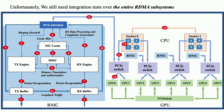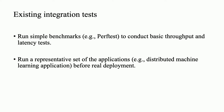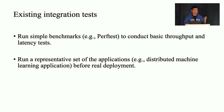Therefore, we need to test the entire RDMA subsystem, which includes the RDMA NIC and all related hardware components. We call this the RDMA subsystem. People today have two approaches to conduct such integration tests: the first is to run simple benchmarks such as perftest to measure end-to-end RDMA performance in terms of throughput and latency; the second is to run a representative stack of real applications. For example, if the cluster is aimed at supporting a distributed machine learning application, we just run that application in a test cluster to see whether it can trigger any anomaly.